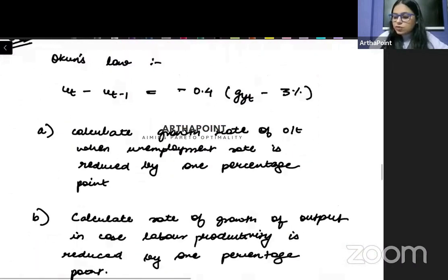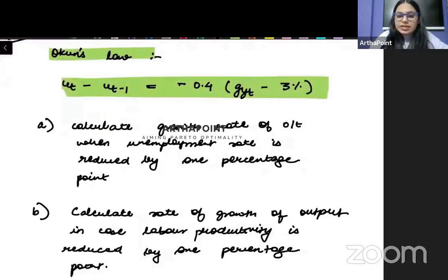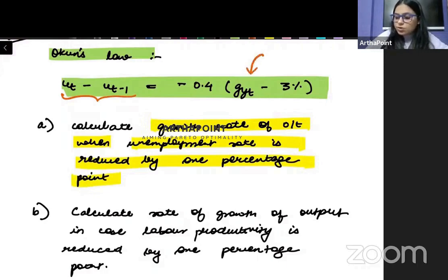The third kind of numerical that can be asked can be based on Okun's law. So what happens here is that they will give you an Okun's law equation. And then they will tell you that look, the growth rate of output when unemployment rate is reduced by 1% point. So we are reducing unemployment rate by 1% point. What is going to happen to the growth rate of output? Even more important is this. This is very, very important. Mark my words, it can be asked in exam. Tomorrow's exam.